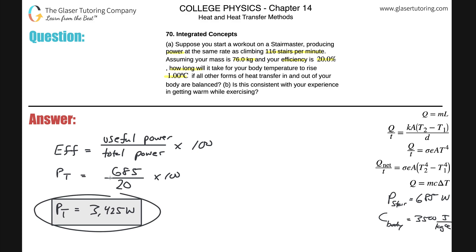And then the other remaining fraction of that total power, in other words the 80 percent, is used to increase the temperature of your body. So in other words, the heat power, P sub H, is going to be the difference between the total power 3425 and the useful power 685.